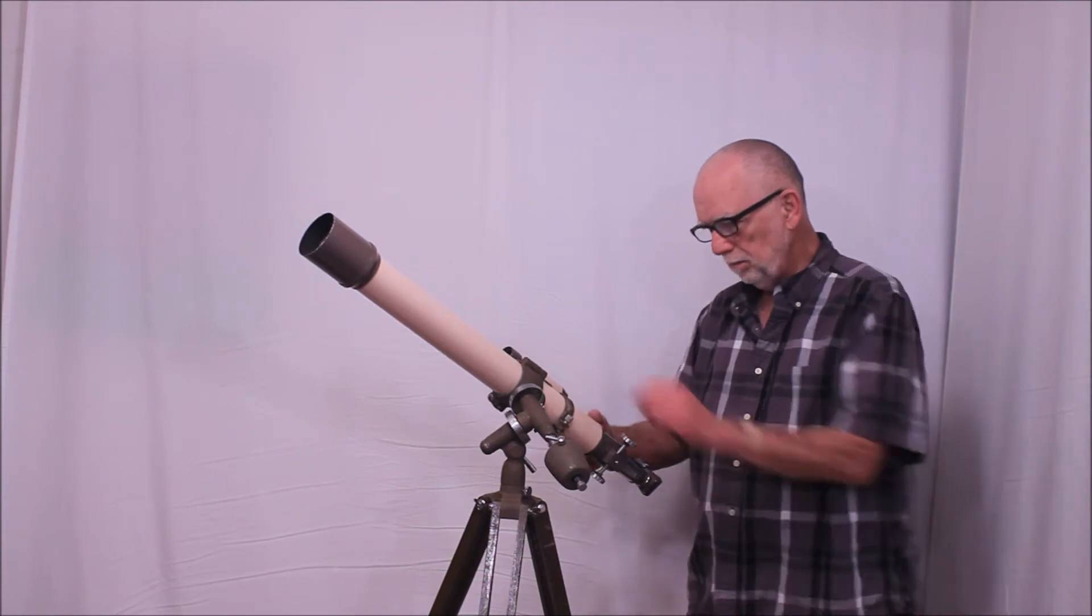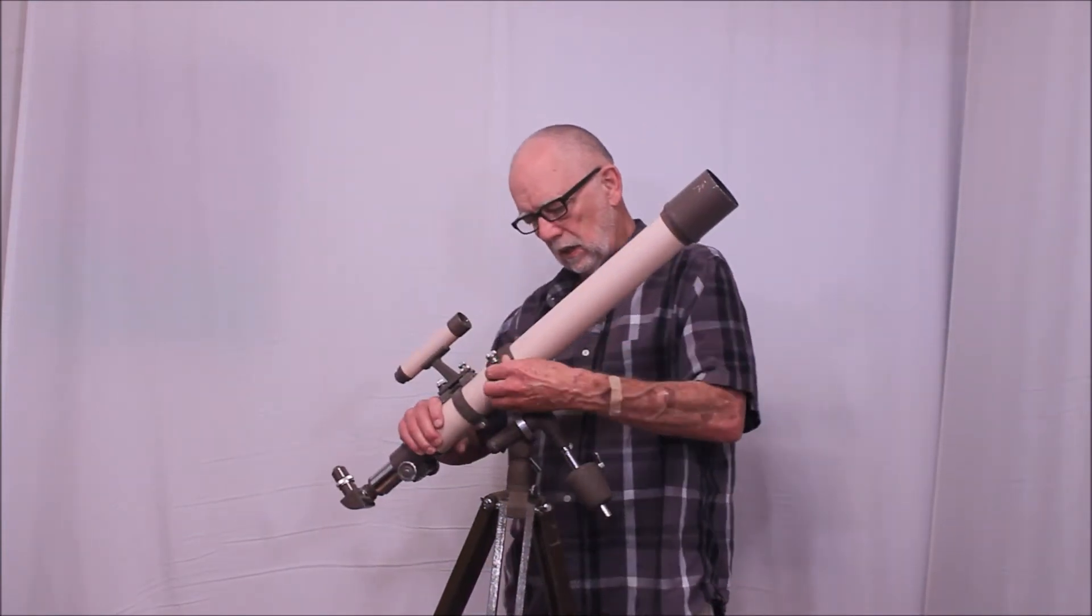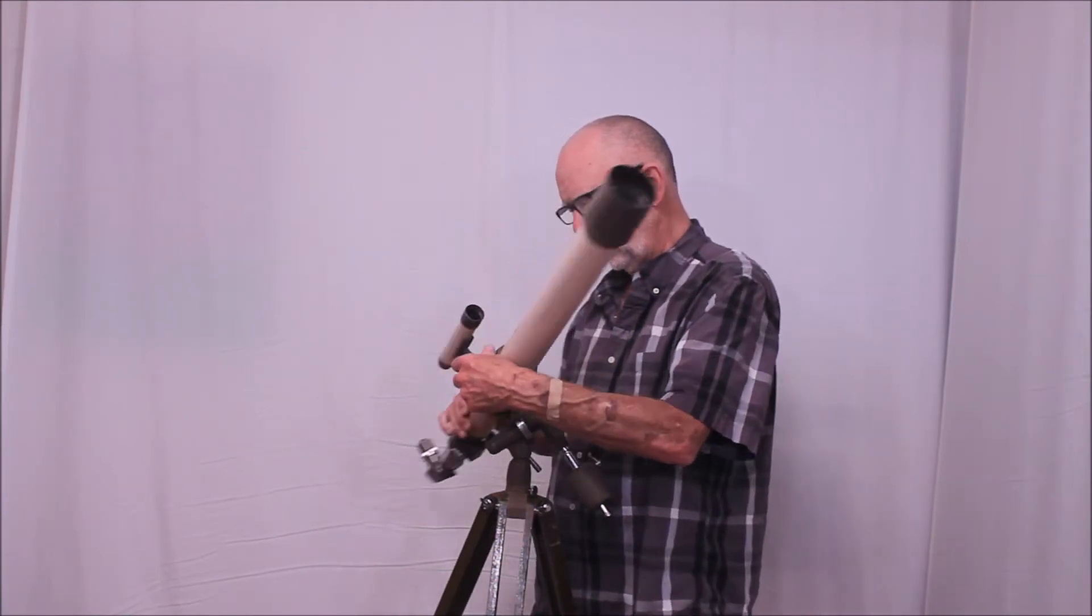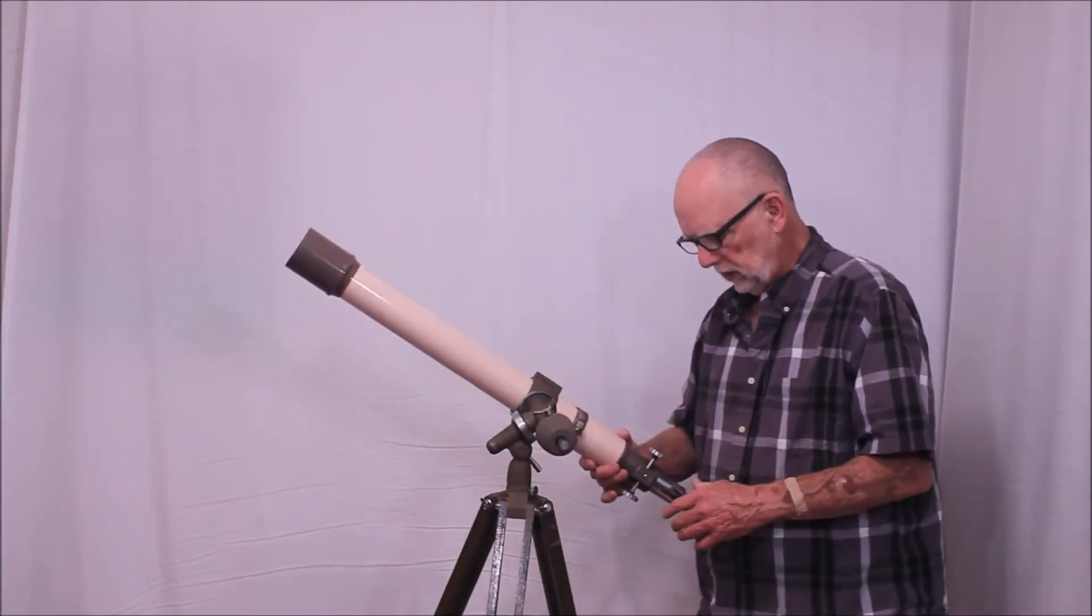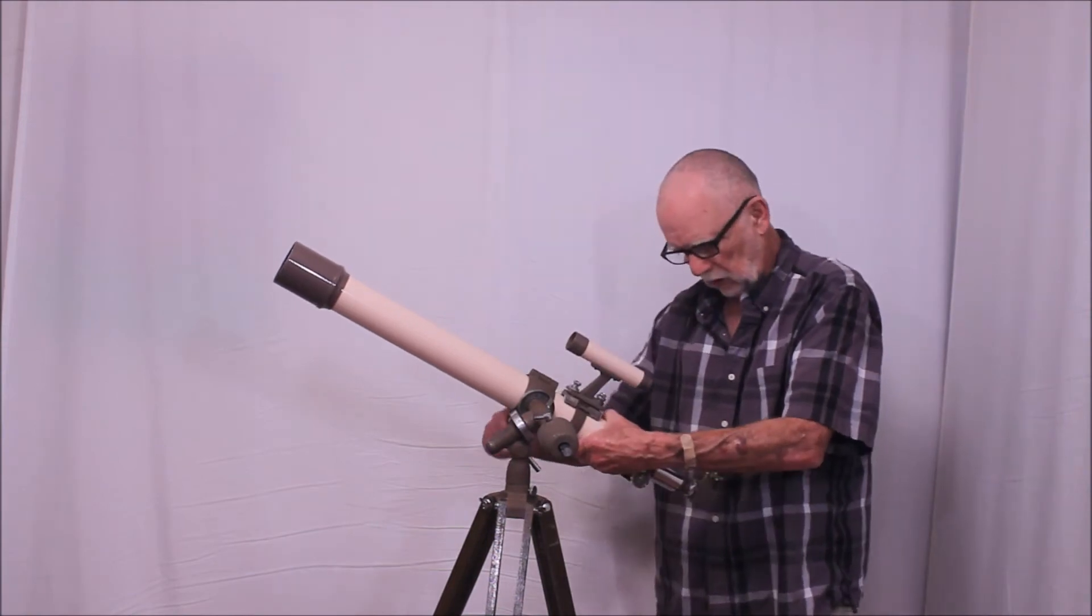Now, if you balance this properly, which is very doable, because this thing has a clamshell, you can slide the scope back and forth so you can balance it nicely. And once you get it balanced, you can also rotate it like so if you prefer.